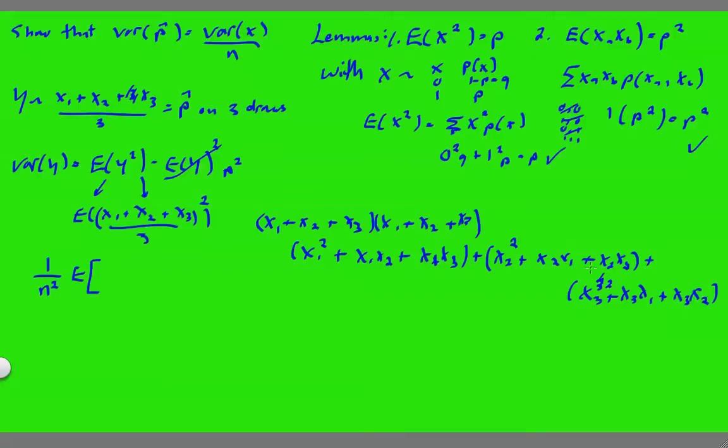So we're going to get this plus x2 squared plus x2, x1 plus x2, x3 plus x3 squared plus x3, x1 plus x3, x2. So what we want to see here, this is where the magic happens. How many of these squared guys do we get? We get 3 of them. So since we know that x is iid, independent, identically distributed, we know that we would get 3, we can just pretend that it's all the same.